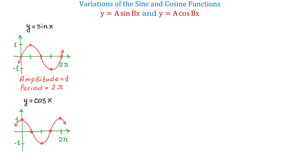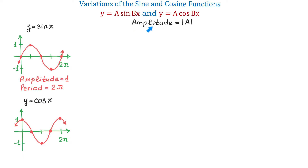In the forms we will discuss in this video, there is a number a in front of the function and a number b in front of x. Number a causes the graph to stretch or to shrink vertically, and number b causes the graph to stretch or to shrink horizontally. The amplitude of each of these functions is found by taking the absolute value of a — so the amplitude equals the absolute value of a.